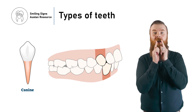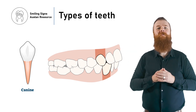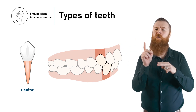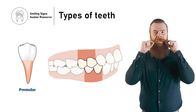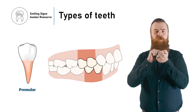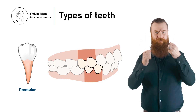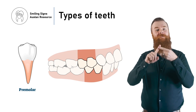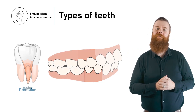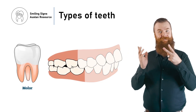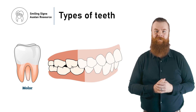Next to the lateral incisors are the canines. They are used to tear foods apart. Further back are the premolar and molar teeth, which are used for chewing.